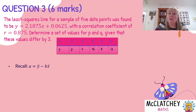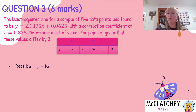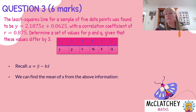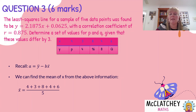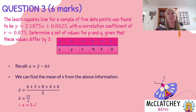Now we have a and b, but we need to work backwards to find the y values. Remember that a = ȳ − b·x̄. We've got a and b, and we can work out the mean of x using the table because we have all our x values. Adding 4, 3, 8, 4, and 6 and dividing by 5 gives us x̄ = 5. That mean of x was worth our second mark.